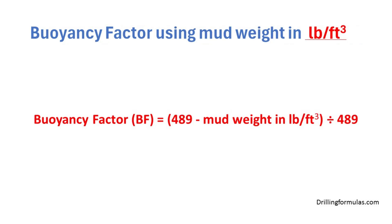Buoyancy factor formula using mud weight in pound per cubic feet: buoyancy factor is equal to 489 minus mud weight in pound per cubic feet, divided by 489.